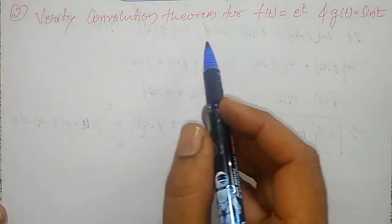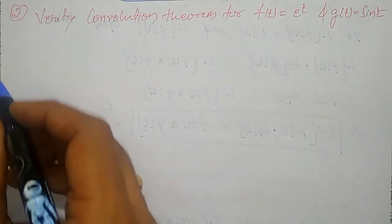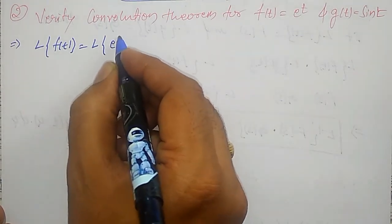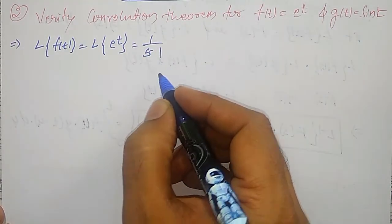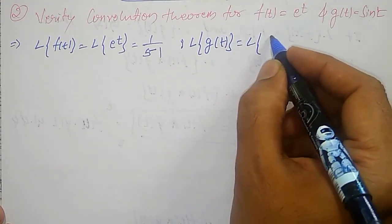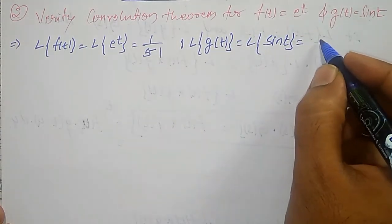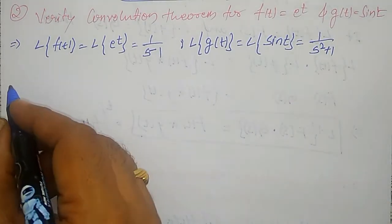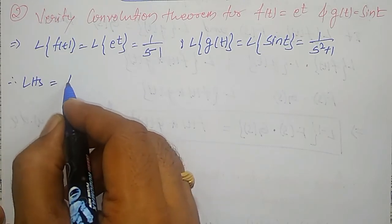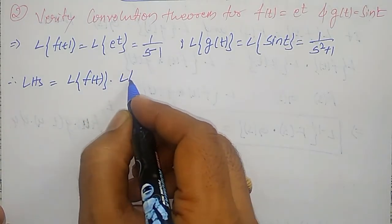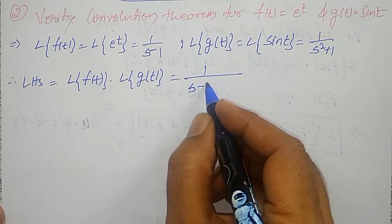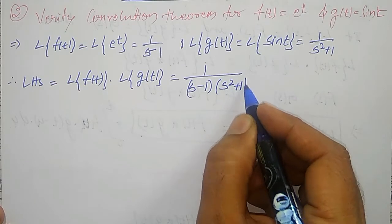My next problem: verify the convolution theorem for f of t equal to e to the power t and g of t equal to sin t. Let me find out first the Laplace transform of f of t, that is the Laplace transform of e to the power t, which is 1 divided by s minus 1. The Laplace transform of g of t, that is the Laplace transform of sin t, is 1 divided by s square plus 1. Therefore, LHS of the Laplace transform of f of t into the Laplace transform of g of t equals 1 divided by s minus 1 into s square plus 1.